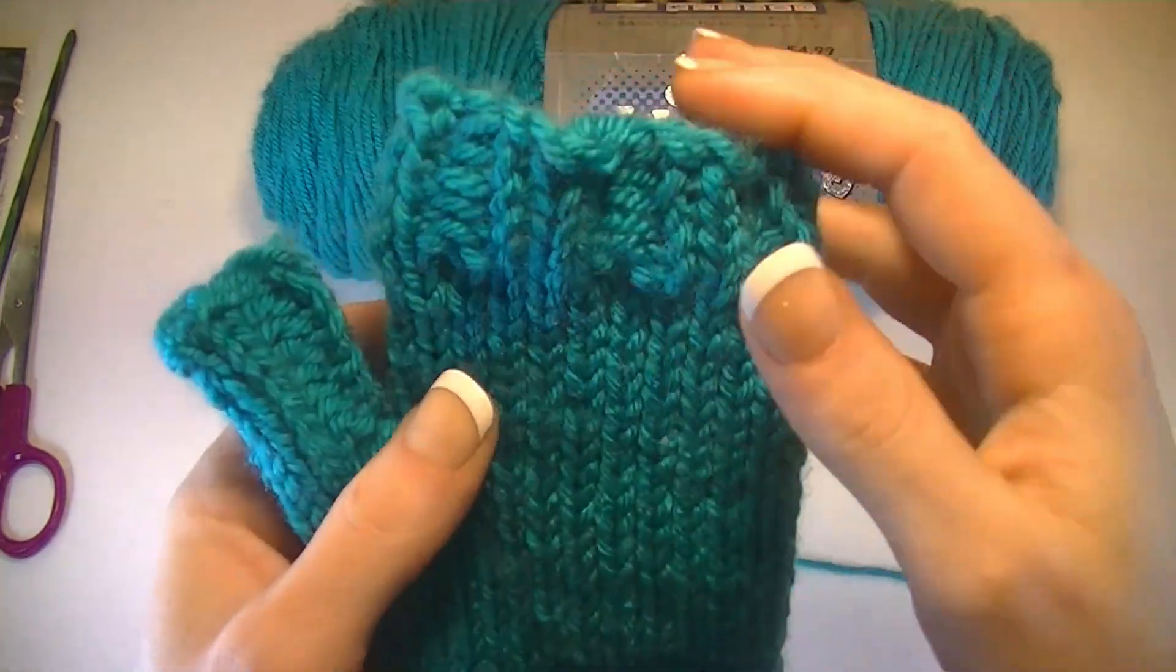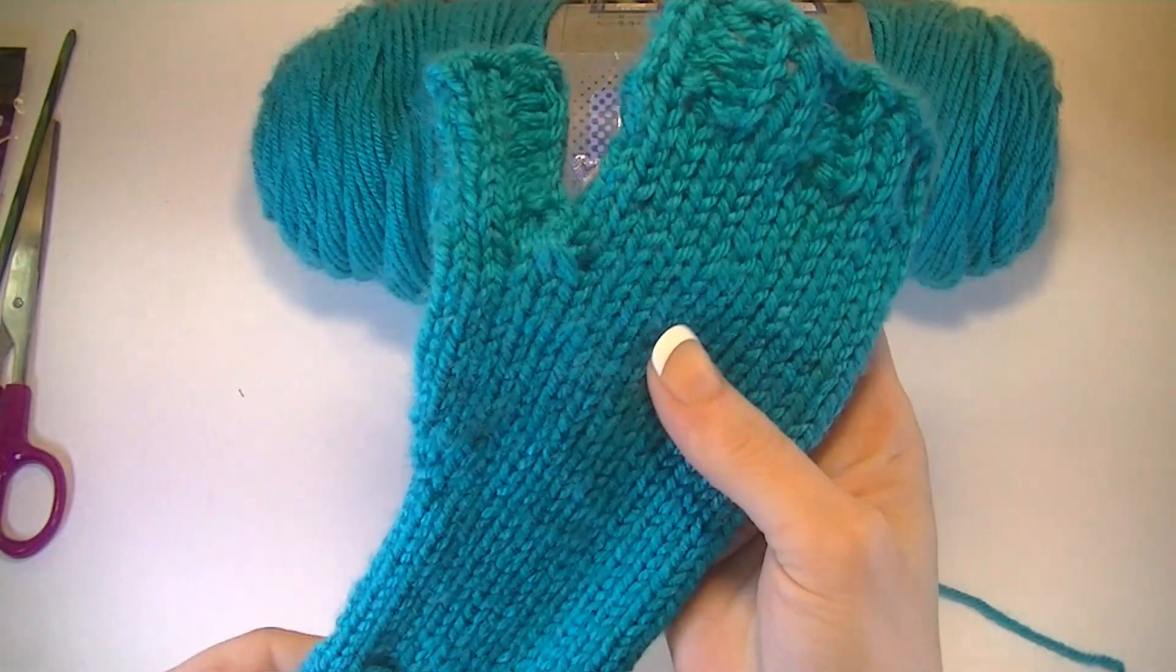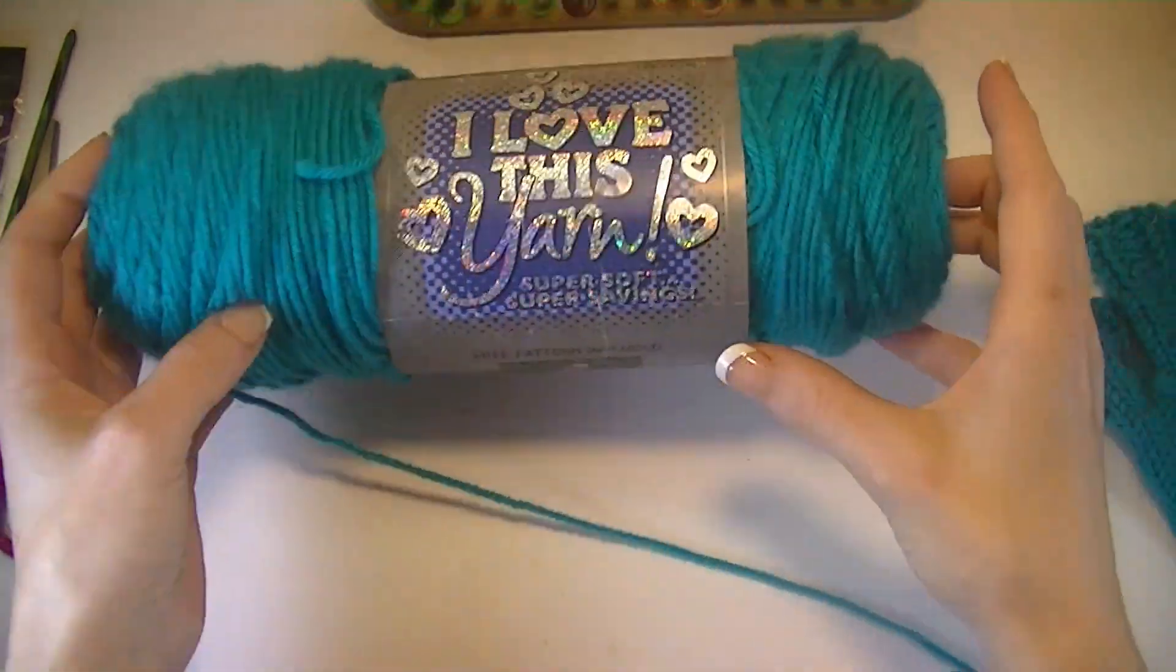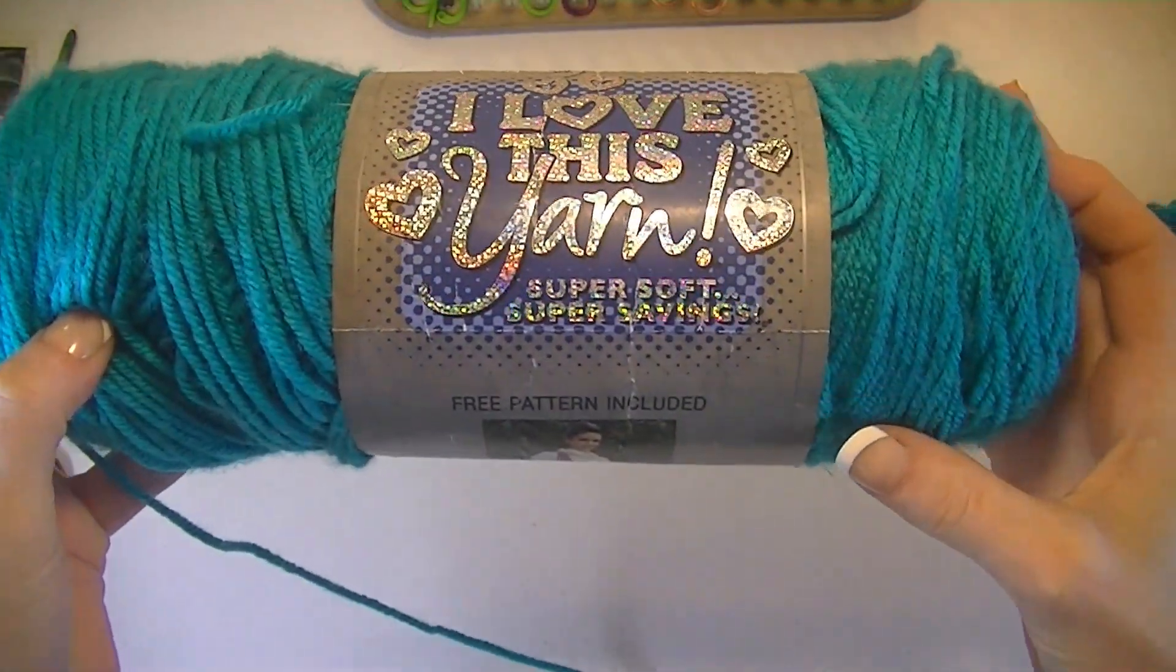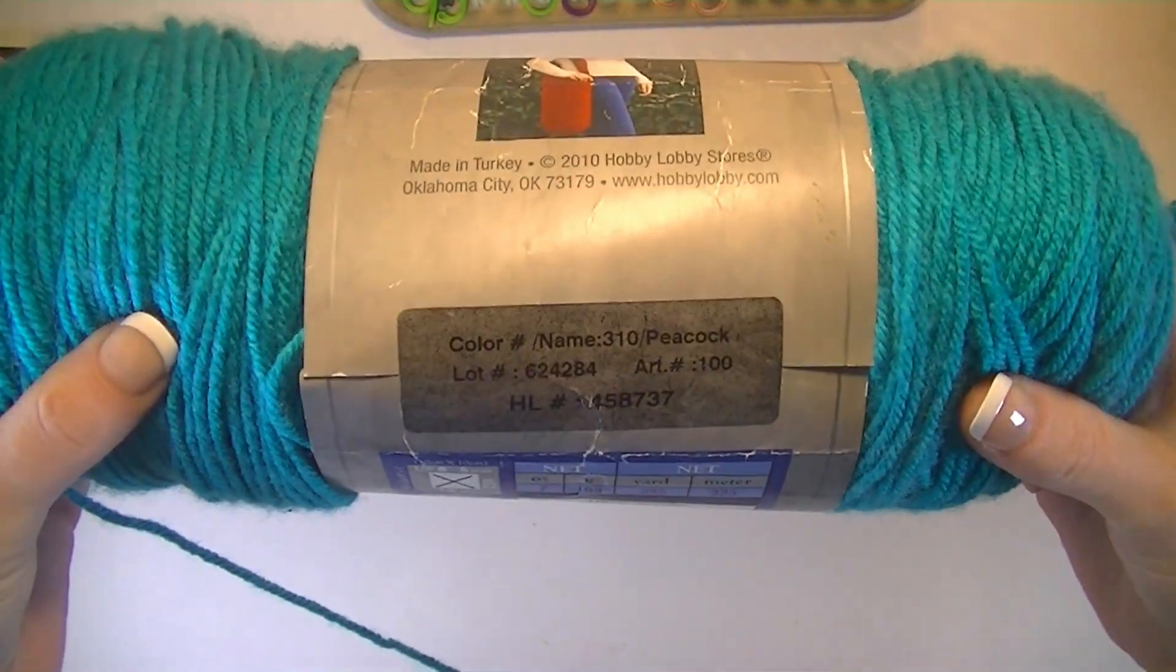For the double rib edge fingerless gloves, we will be using the I Love This Yarn Super Soft Super Saving in Peacock.